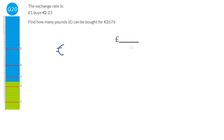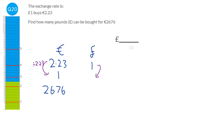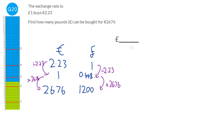We're told that £1 equals 2.23 euros, and we want to find what 2,676 euros is in pounds. Dividing both sides by 2.23 gives 1 euro = £0.448... Multiplying both sides by 2,676 gives £1,200. So 2,676 euros is £1,200.